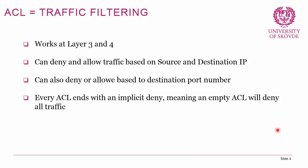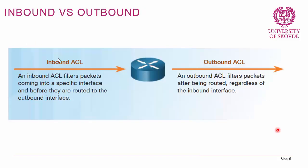There are two different ways to apply ACLs to interfaces: inbound ACLs and outbound ACLs. An inbound ACL filters packets coming into an interface before they are routed to an outbound interface — the first thing checked when a packet arrives. On the outbound side, the ACL is evaluated just before the packet exits the router.